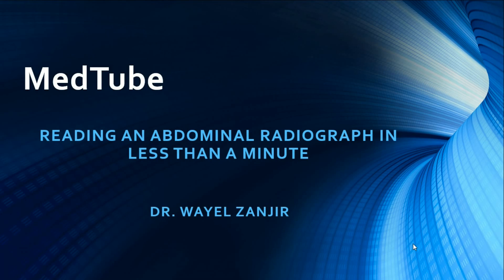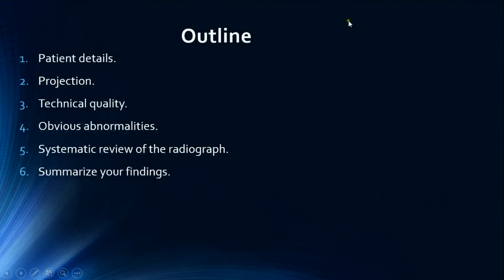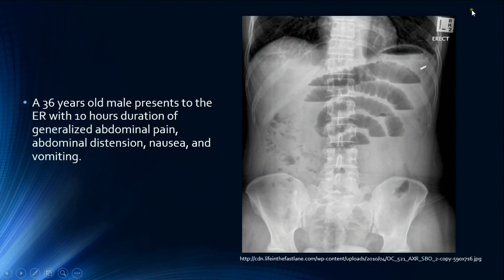Hello and welcome to Medtube again. Today I will demonstrate how to read an abdominal radiograph in less than one minute using the steps we explained in the previous video. We will be taking this abdominal radiograph as an example. The patient is a 36-year-old male presenting to the emergency department with 10 hours of generalized abdominal pain, abdominal distention, nausea, and vomiting. Before commenting, we'll first step back and have a general look at the radiograph to get a complete view.